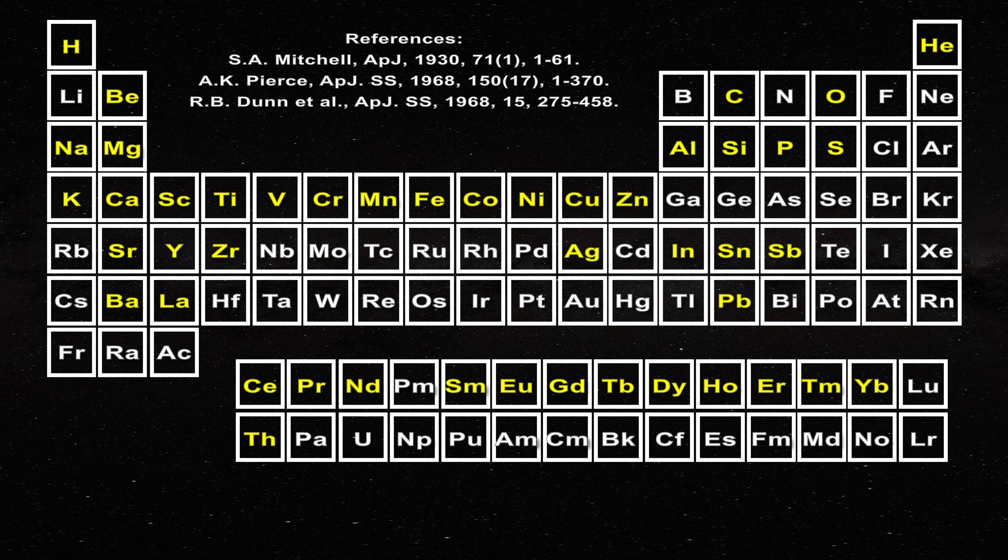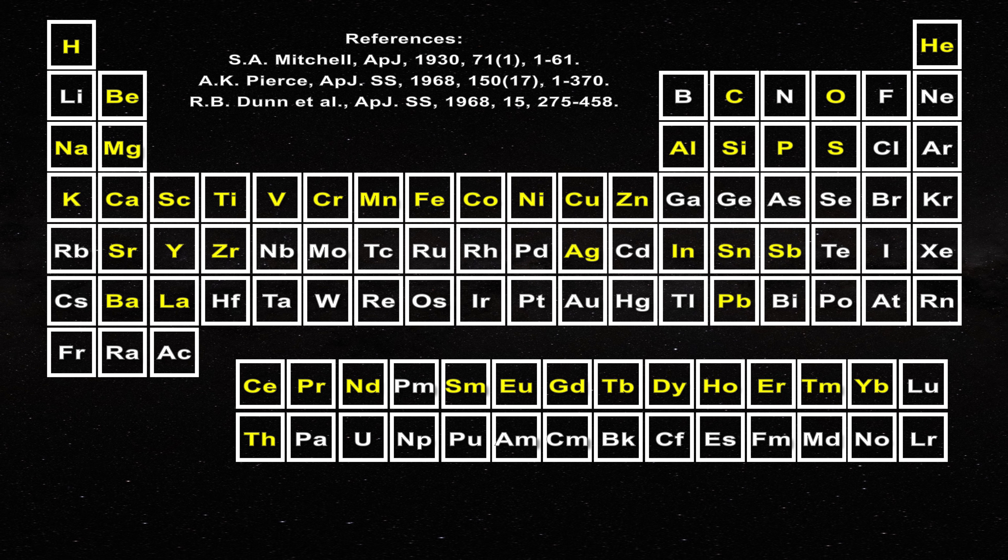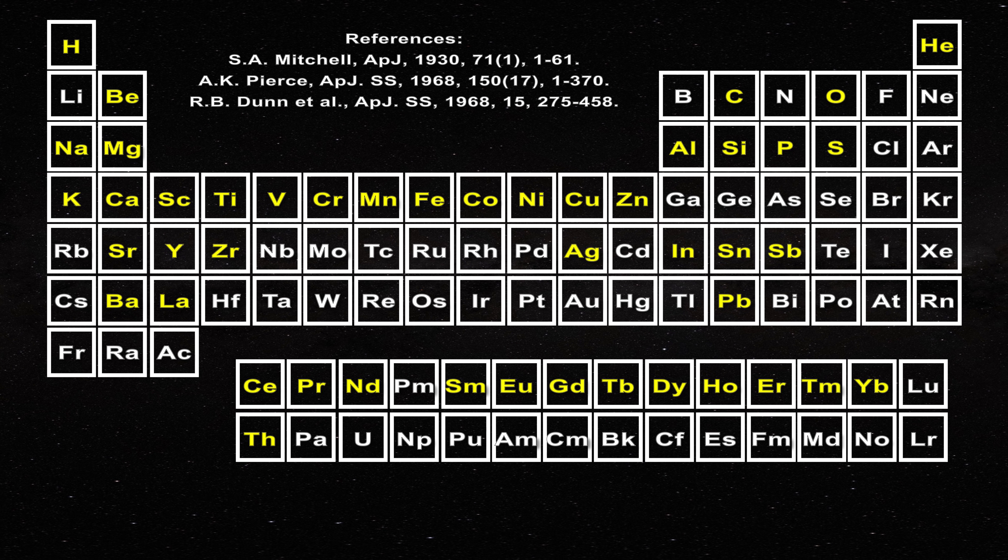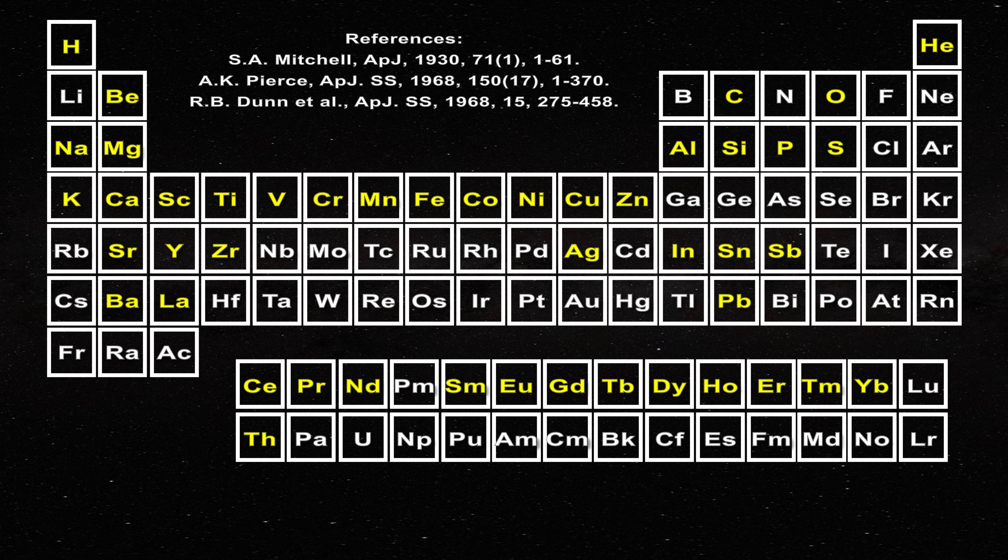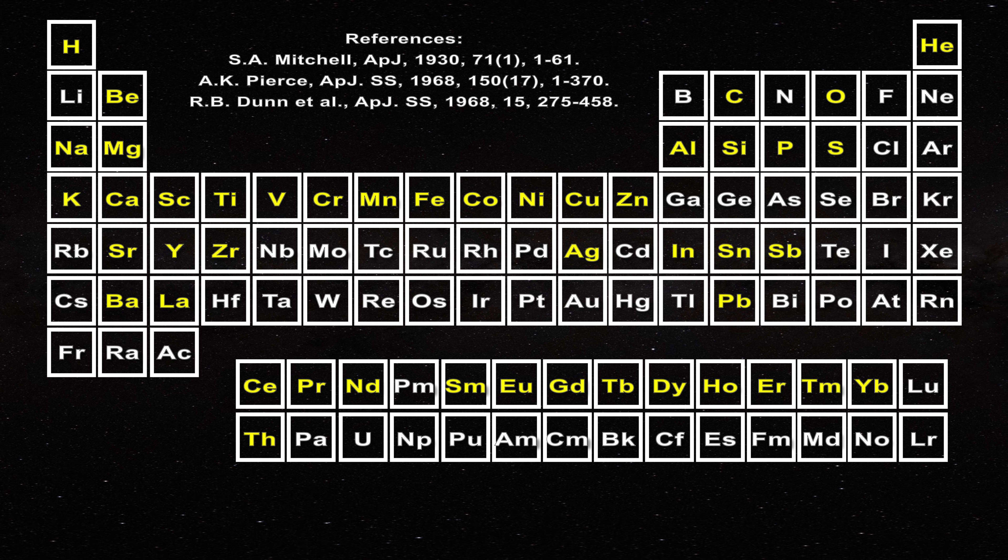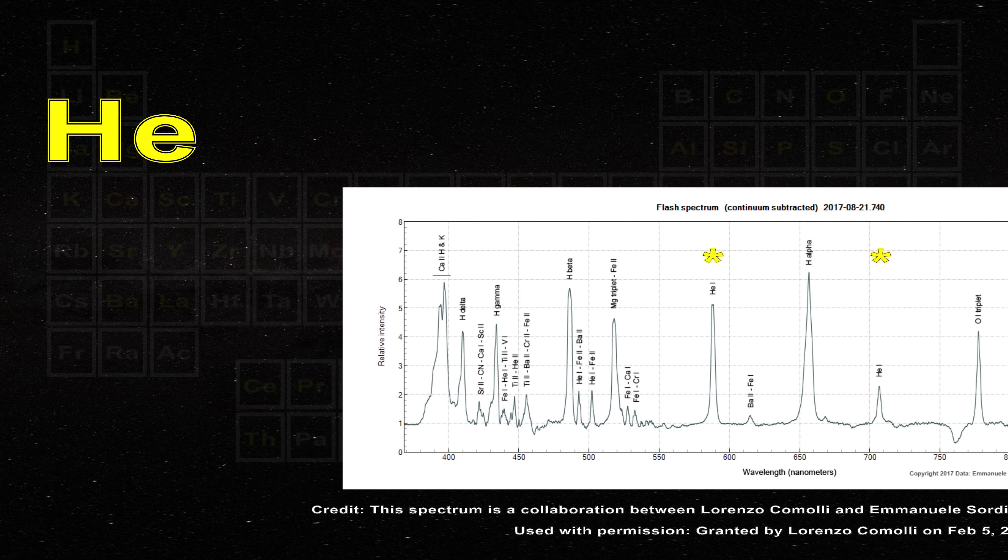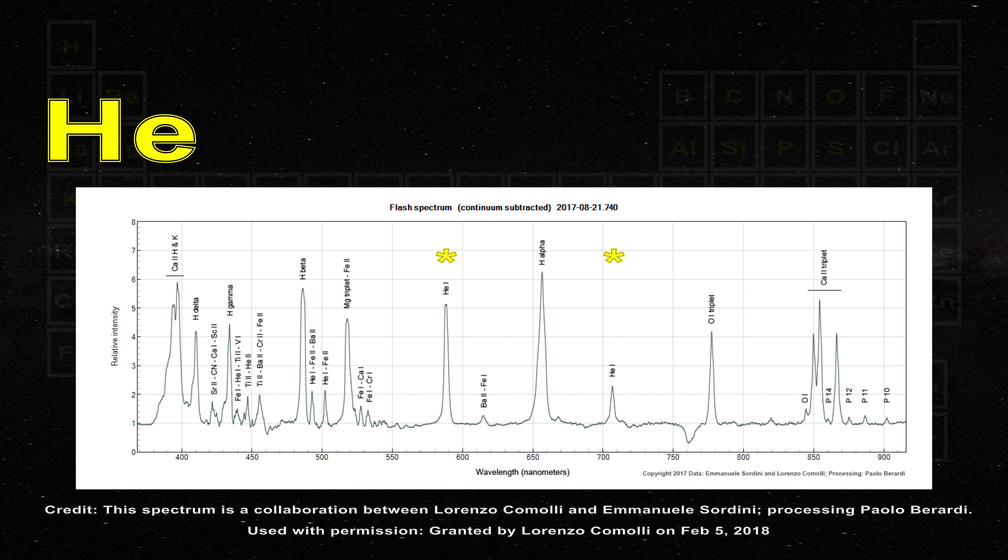Of course if you wish to speak about chemical reactions you should begin by examining the periodic table. In this figure the elements which produce emission lines in the chromosphere are highlighted. You will notice a couple of things. First helium is present. It emits several strong lines in the chromosphere as we previously saw.